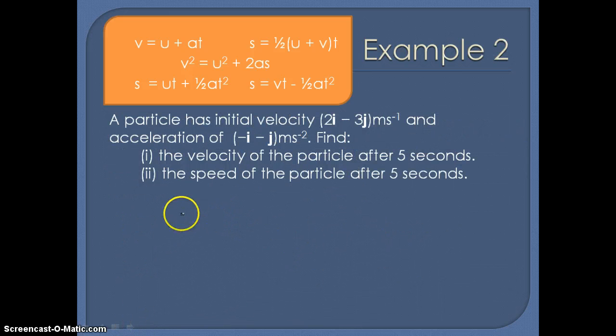Second problem. This time we've been given an initial velocity of 2i minus 3j meters per second and the acceleration of minus i minus j meters per second squared. And we've been asked to calculate the velocity of the particle after 5 seconds.